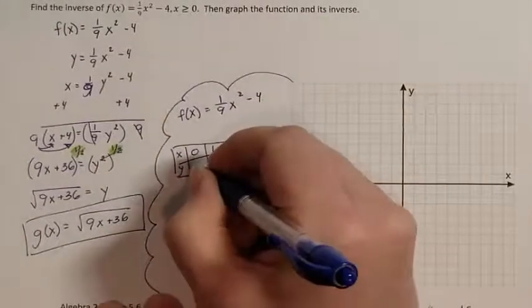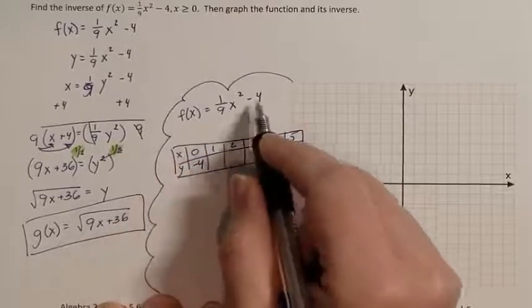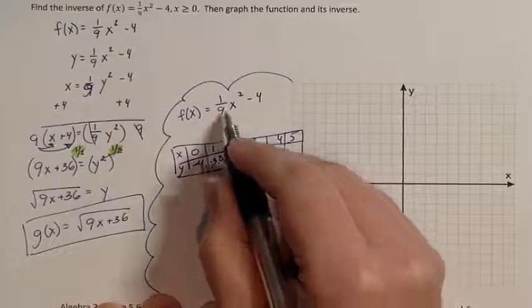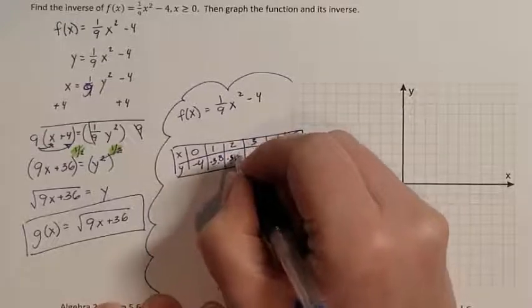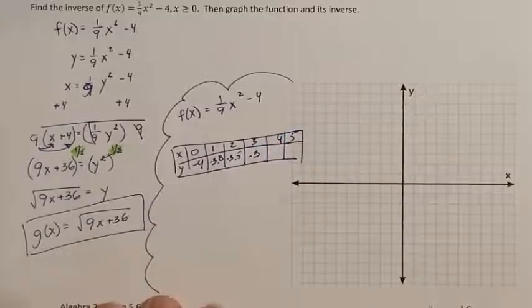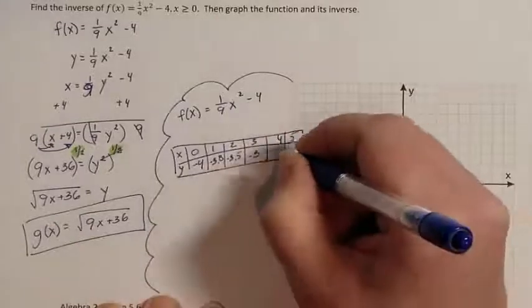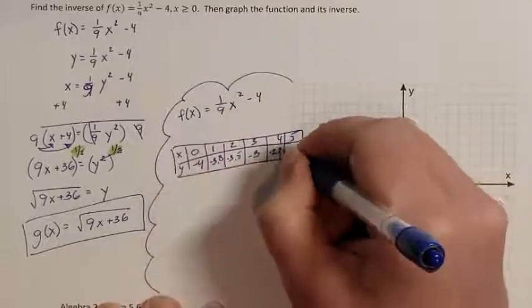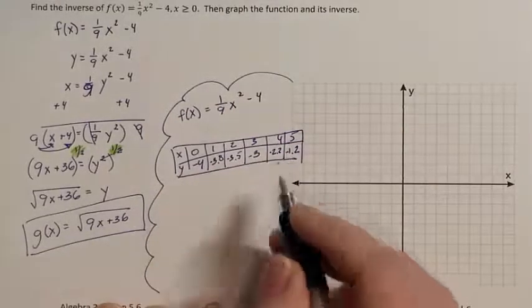So plugging in 0, I got negative 4. Plugging in 1, I got negative 3.8. Plugging in 2, I got negative 3.5. Plugging in 3, negative 3. Plugging in 4, negative 2.2. And plugging in 5, I got negative 1.2. So this would be my f.